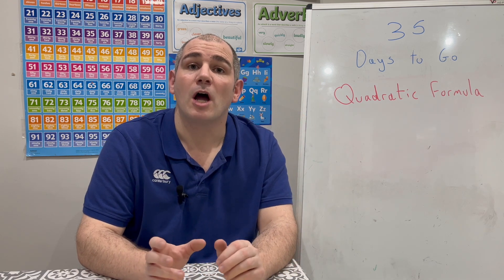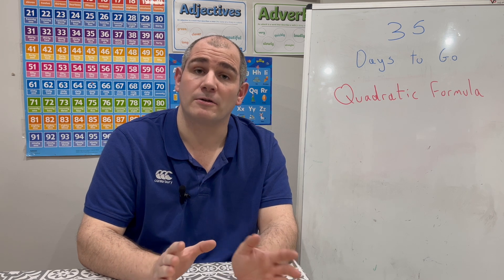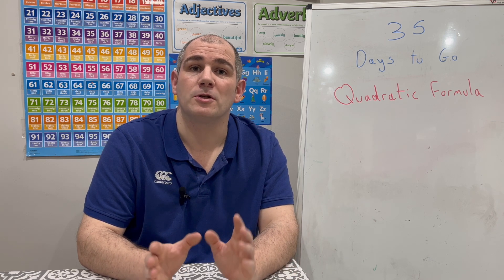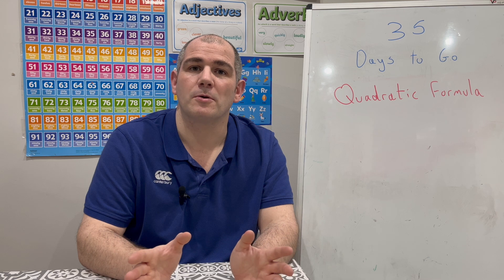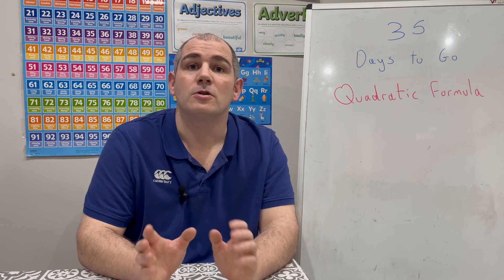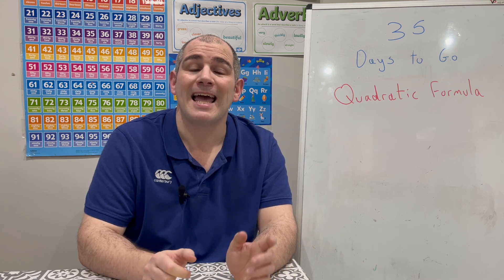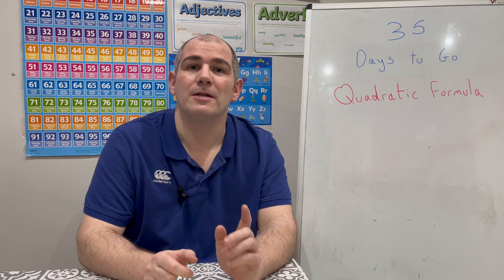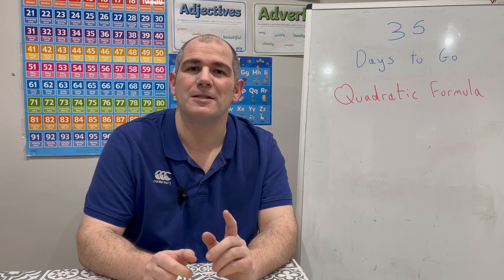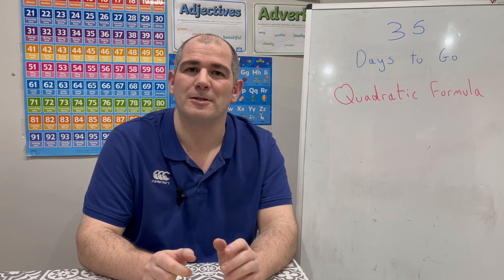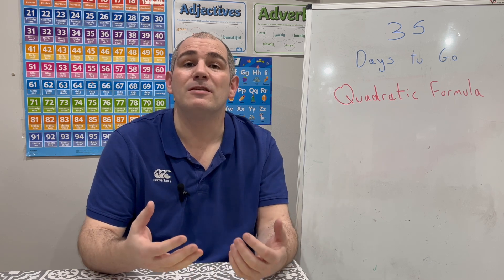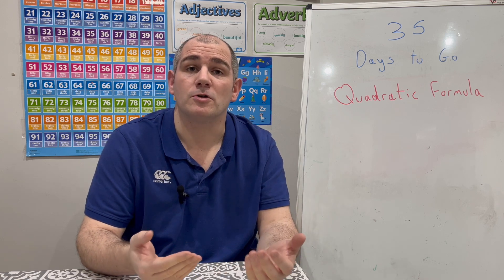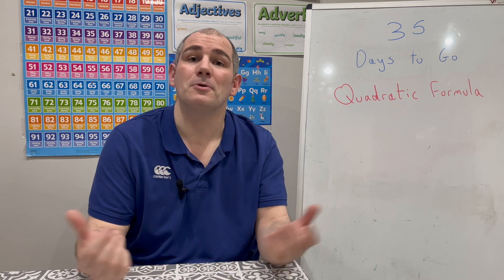So we've looked at how to solve quadratic equations using factorization. Now let's see how we can use the quadratic formula to solve those quadratic equations. The quadratic formula is given to you — it's x equals negative b plus or minus the square root of b squared minus 4ac, all divided by 2a. In this video I'm going to go through an example, there'll be a couple for you to try, and then we'll look at a wordy question as well.